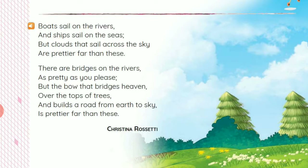Let's see the next lines. 'There are bridges on the rivers as pretty as you please, but the bow that bridges heaven over the tops of trees and builds a road from earth to sky is prettier far than these.' The bow that is above the earth, above the heavens, the road that is built on top reaching up to the sky — so the bow, meaning the rainbow, is more beautiful than all these things.